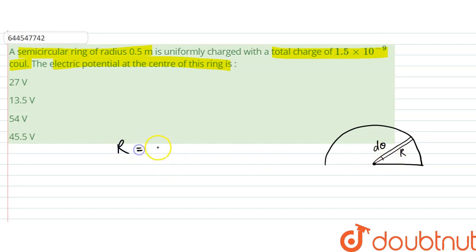First of all, we will write r = 0.5 meter. The charge is given as 1.5 × 10^-9 coulomb. We have to find the potential.